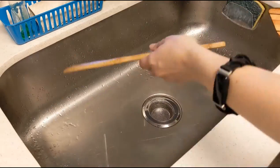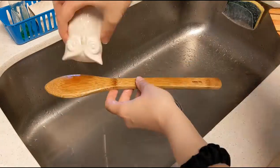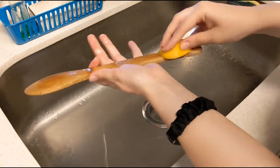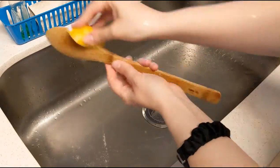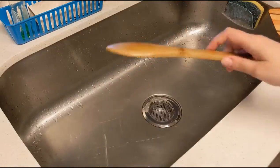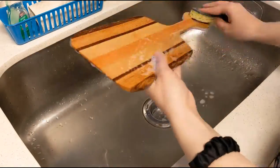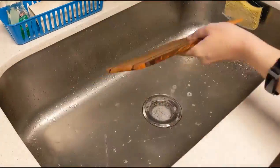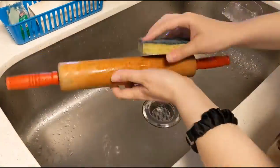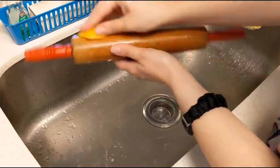If you have any utensils that have particularly stubborn stains or they seem to have an odor, you can actually clean them with salt and a slice of lemon. That's what you can see me doing here. You just take the salt, put it on your utensil, wipe it with the lemon. The salt is going to act as an abrasive and the lemon is going to help keep everything fresh and clean.